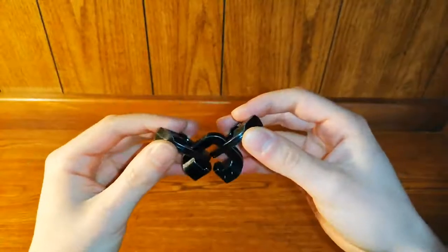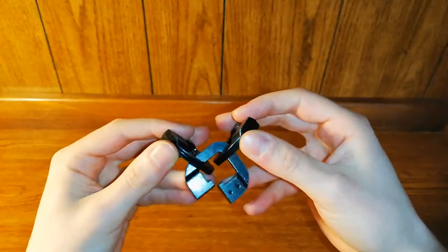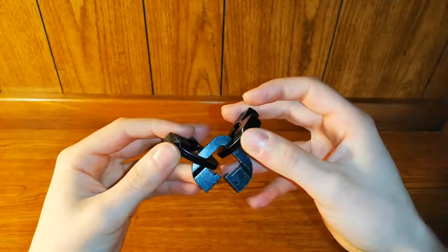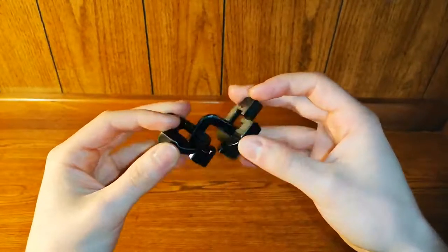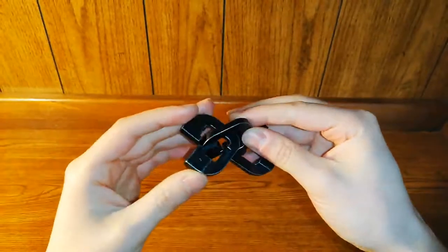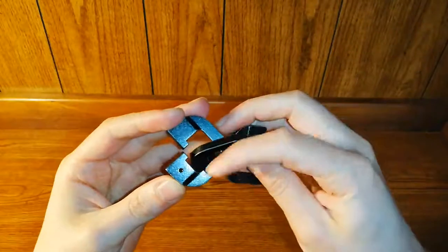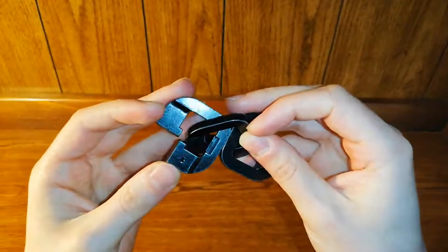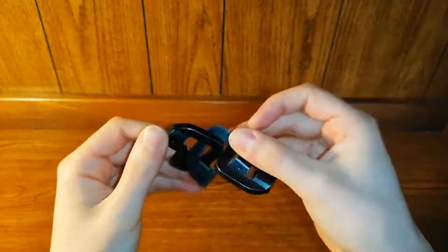The first thing you'll notice is that the number two piece is the most normal. It has symmetrical components on both sides and it looks as you would expect. The number one and three pieces, however...